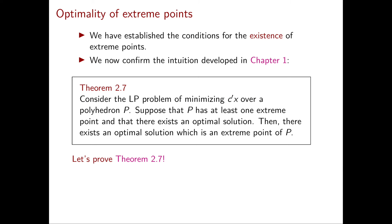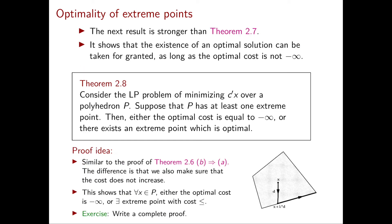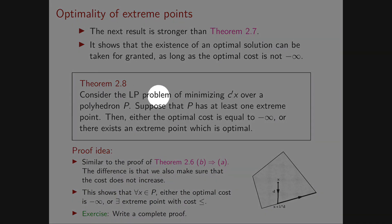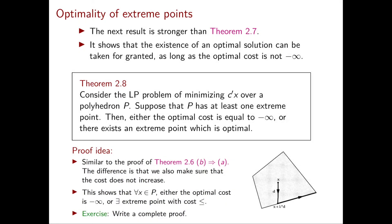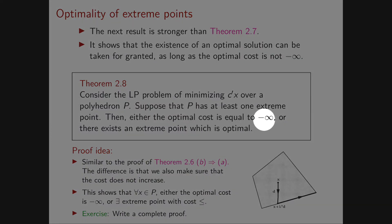Let's get back to the slides. Now that we have shown Theorem 2.7, I want to talk about a theorem that is actually stronger than 2.7. This new theorem, which is Theorem 2.8, gives a nice sufficient condition for the existence of an optimal solution. The sufficient condition is that the optimal cost is not minus infinity. We consider the LP problem of minimizing C transpose X over a polyhedron P, and assume that P has at least one extreme point. Then only two things can happen: either the optimal cost is equal to minus infinity, or there exists an extreme point which is optimal.